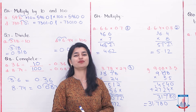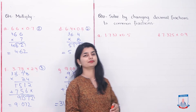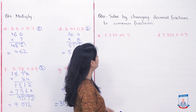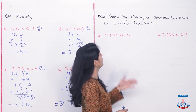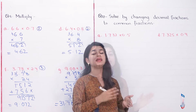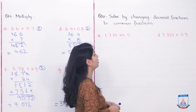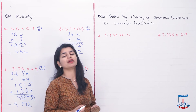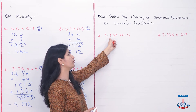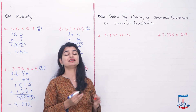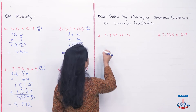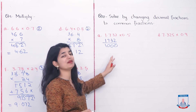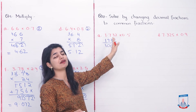Now, let's go and see exercise 4B question number 10. Today's lecture will cover our last question. Part A is 1.732 into 0.5. Solve by changing decimal fractions to common fractions. First, you have to convert your decimals into common fractions, then solve them. If you have 1.732, how can you make it a regular fraction? By seeing how many decimal places there are: 1, 2, and 3 — three decimal places, so the denominator is 1000. We can write it as 1732 over 1000. So 1732 over 1000 and 1.732 are the same thing.